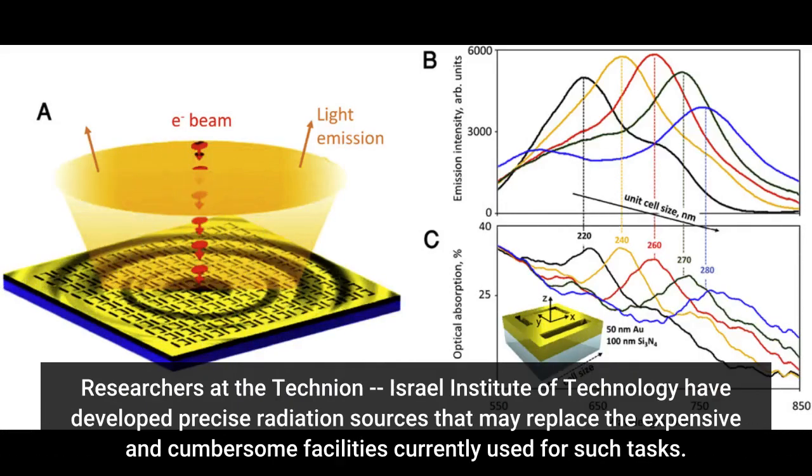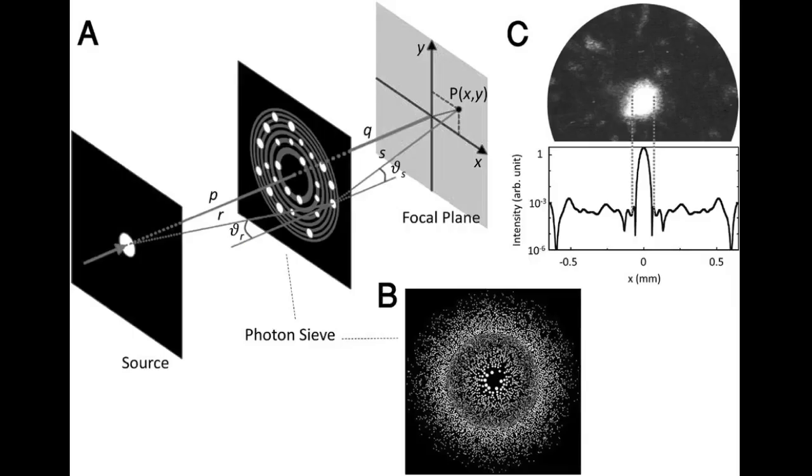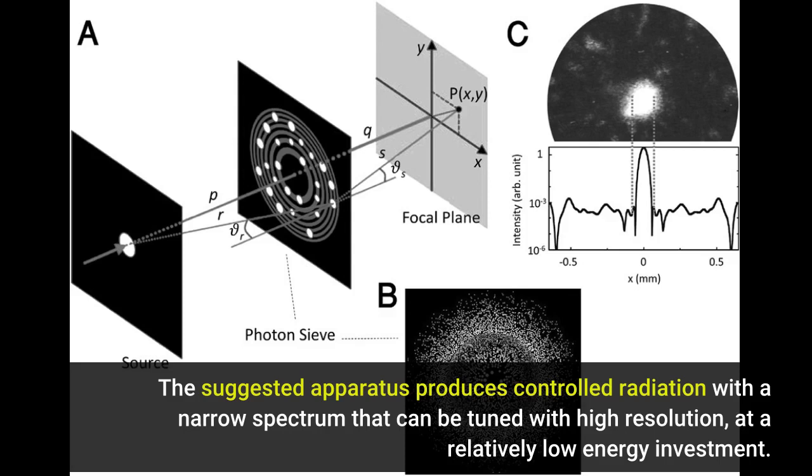Researchers at the Technion, Israel Institute of Technology, have developed precise radiation sources that may replace the expensive and cumbersome facilities currently used for such tasks. The suggested apparatus produces controlled radiation with a narrow spectrum that can be tuned with high resolution, at a relatively low energy investment.